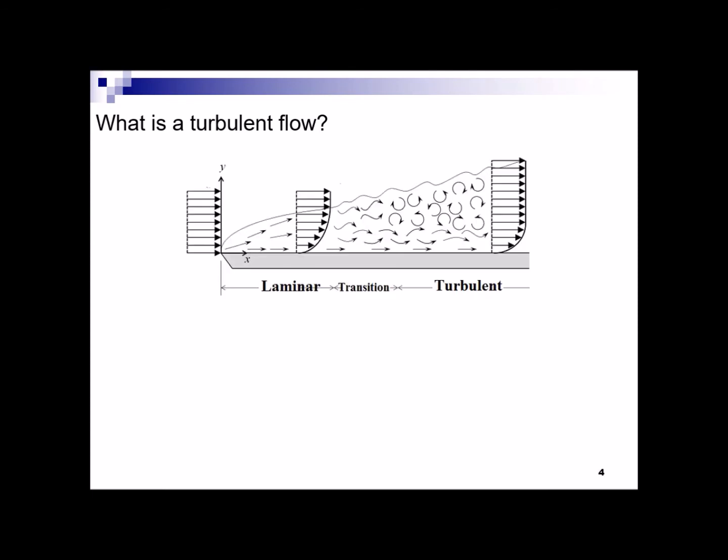This figure shows the flow over a flat plate. Considering this figure, let's answer another important question: what is the main difference between a turbulent flow and a laminar flow? Based on this figure, the main difference is that the turbulent flow in fact contains rotational flow structures which are the so-called turbulent eddies. These eddies have a wide range of length scales.